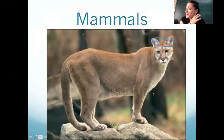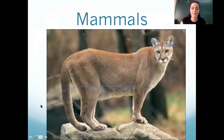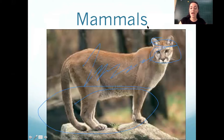Mammals have four legs and fur. They have hair or fur, and they give birth to live young.